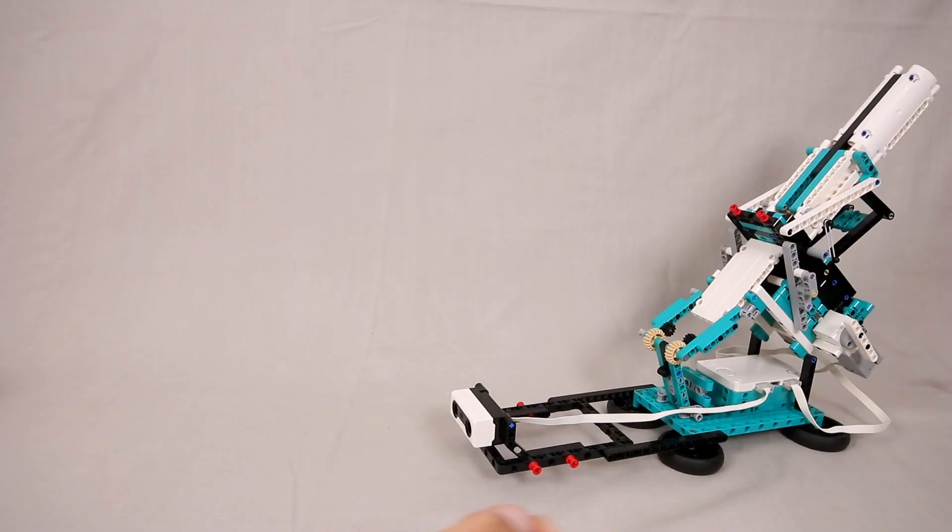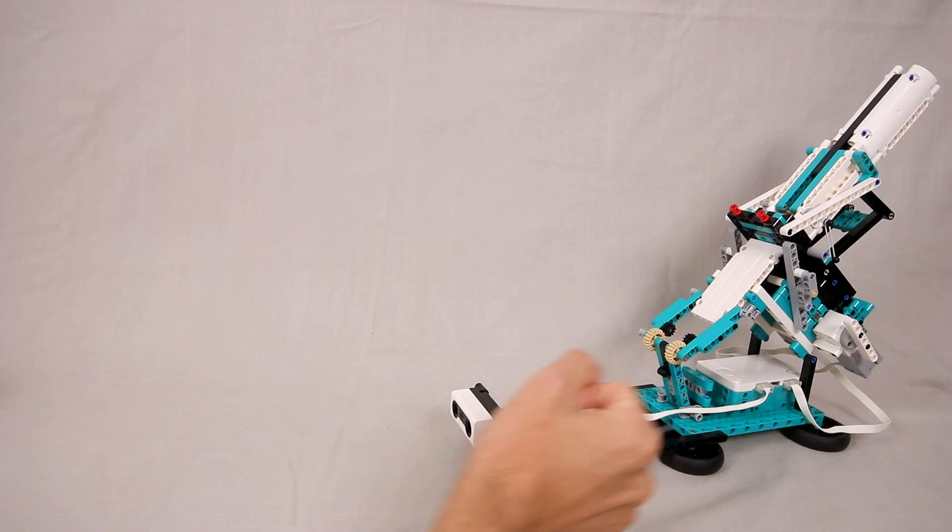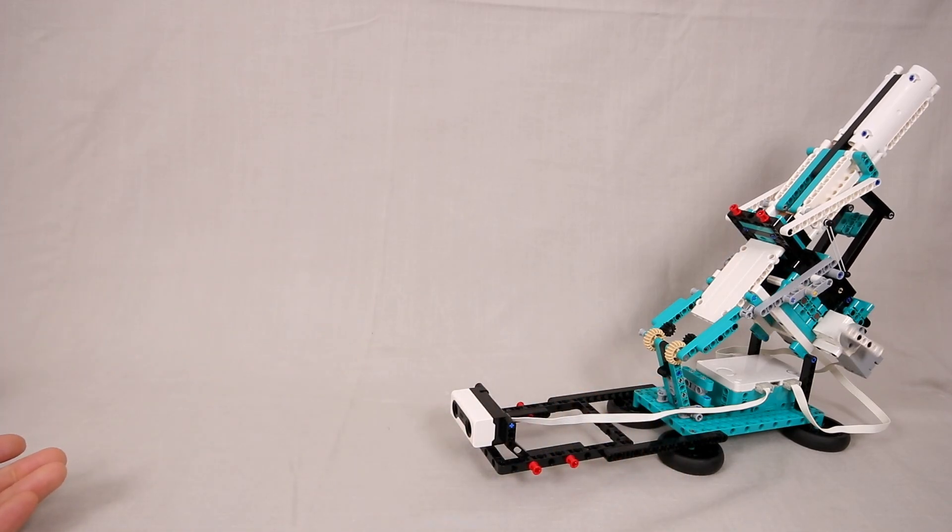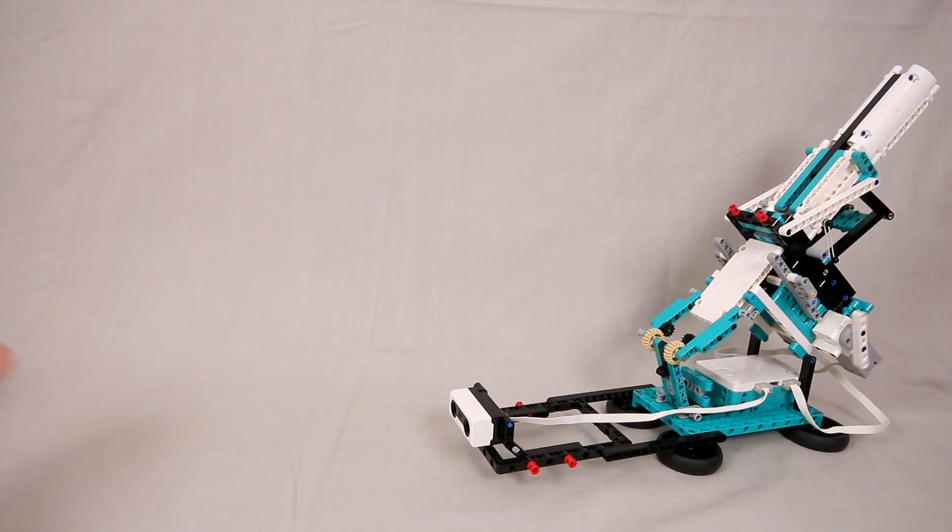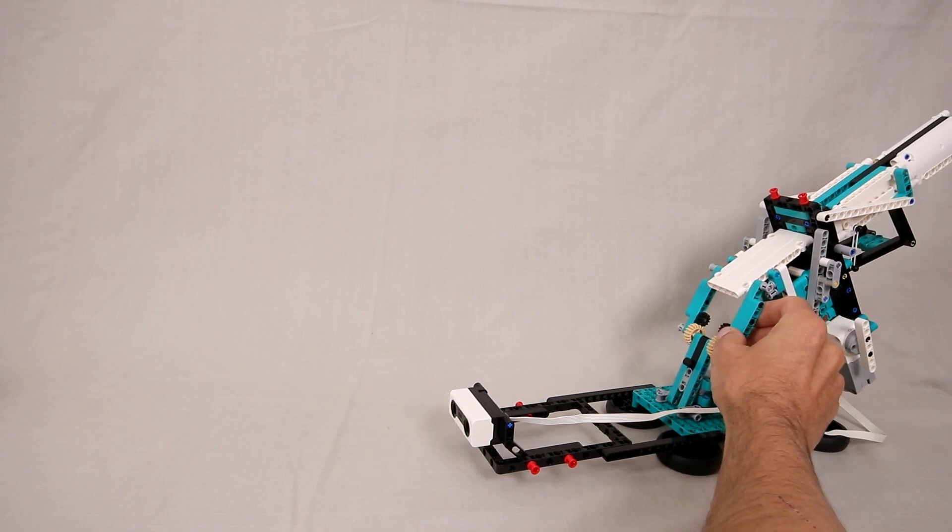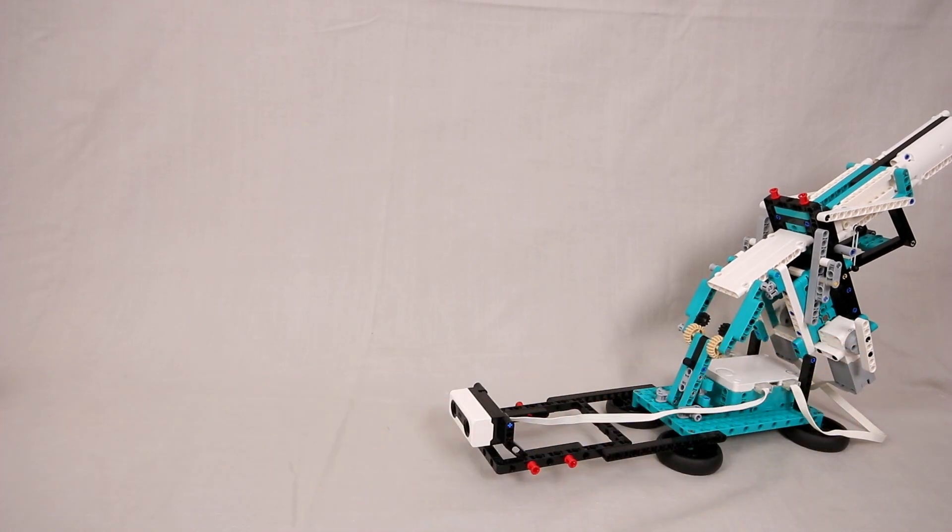I currently have the program configured to rotate the launch arms one full rotation which will actually launch two caramels. And if we adjust the launch angle to its maximum it should launch the caramels to just in front of the proximity sensor.